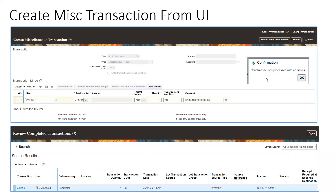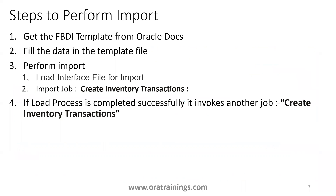If you want to validate what you entered and check the status, navigate to Review Completed Transactions in the task list. You'll be taken to a search screen where you can search by the item number you entered. This is how we can create a miscellaneous transaction from the user interface.